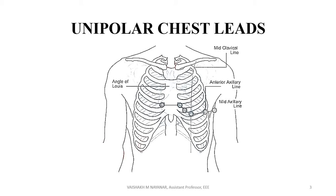V1 is the 4th right intercostal space near the sternum, and V2 is the 4th left intercostal space near the sternum. V3 is also near the 4th left intercostal space near the sternum. V4 is the 5th left intercostal space in the mid-clavicular line. V5 is the 5th left intercostal space in the anterior axillary line, and V6 is the 5th left intercostal space in the mid-axillary line. There are 6 electrodes in the chest.